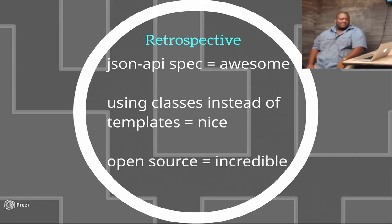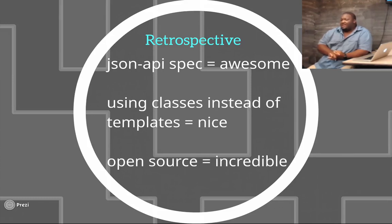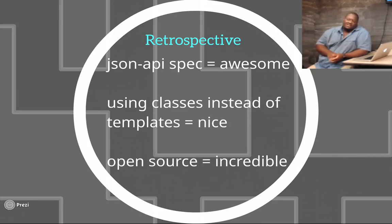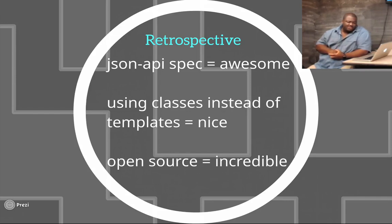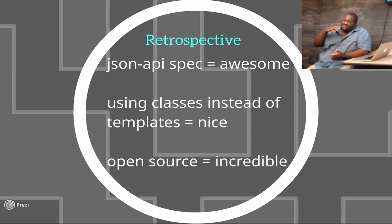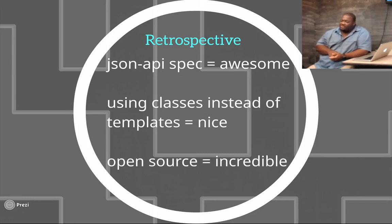Just to retrospect a little bit: the JSON-API specification is awesome. I love to debate, as anybody who's worked with me knows, but that can get in the way of productivity. If there's one area where I can have people smarter than me who've made decisions about how things should interact — and that has a direct impact on the features we're building — those are things I want to utilize. Using classes instead of templates is something I never even thought of. I was having a conversation with Kyle about it — it seemed so foreign to me when I first started.